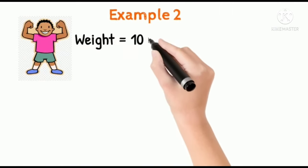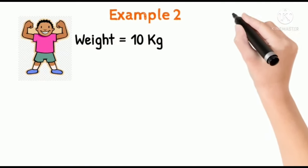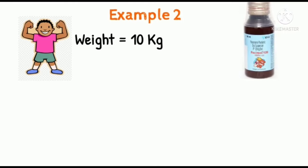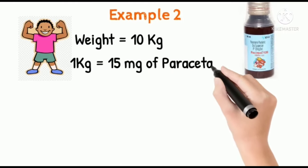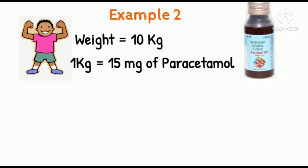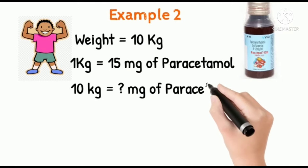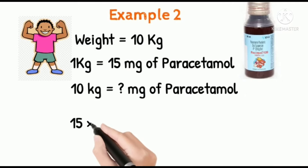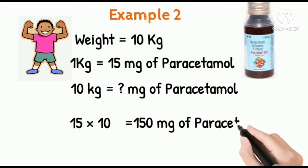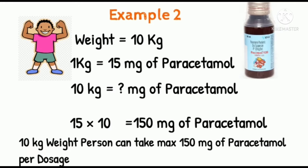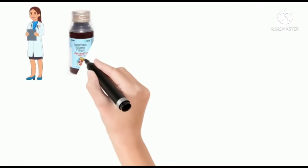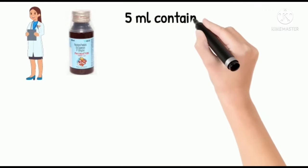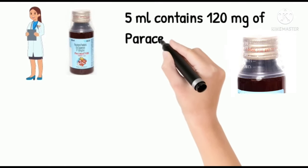Now let's go to another example. Suppose a baby weighs about 10 kg and the doctor advises P120 syrup. As already mentioned, a 1 kg weight person can have a maximum of 15 milligrams of paracetamol per dosage. So a 10 kg person: 15 into 10 is 150 milligrams of paracetamol per dosage. Here the doctor advises P120 syrup.